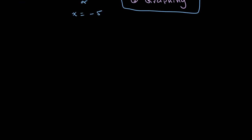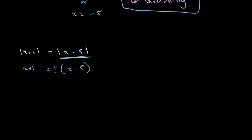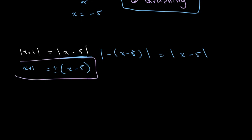For solving through algebra, let's say that we have the equation: the absolute value of x plus 1 is equal to the absolute value of x minus 5. If you remember what we did above, we can essentially say that x plus 1 is equal to positive or negative x minus 5, because the absolute value of negative x minus 5 is equal to the absolute value of x minus 5. So either x plus 1 is equal to negative x minus 5, or x plus 1 is equal to x minus 5.